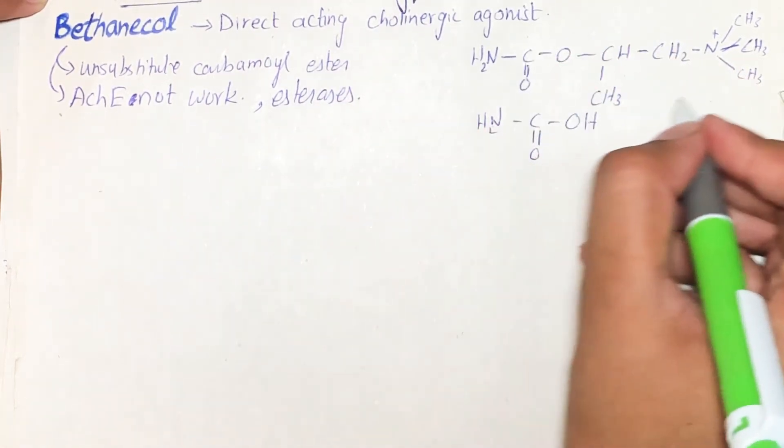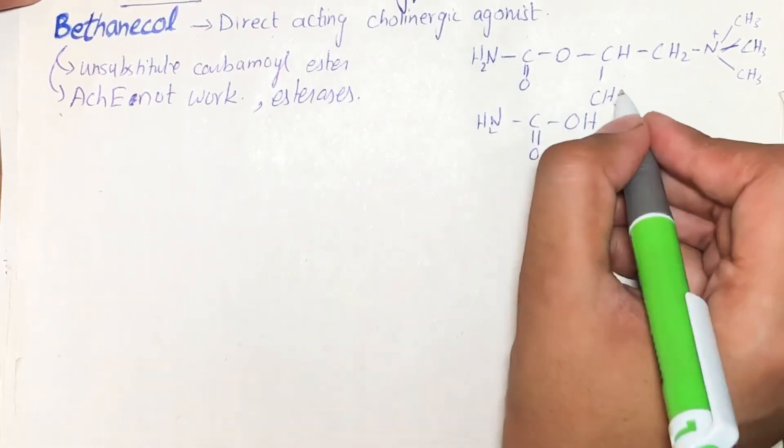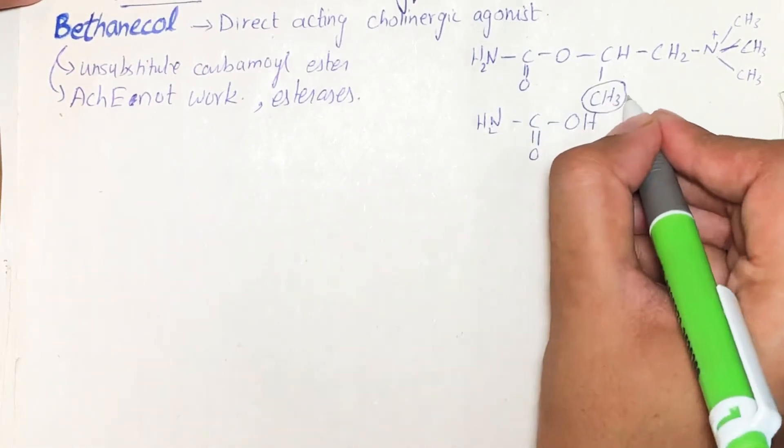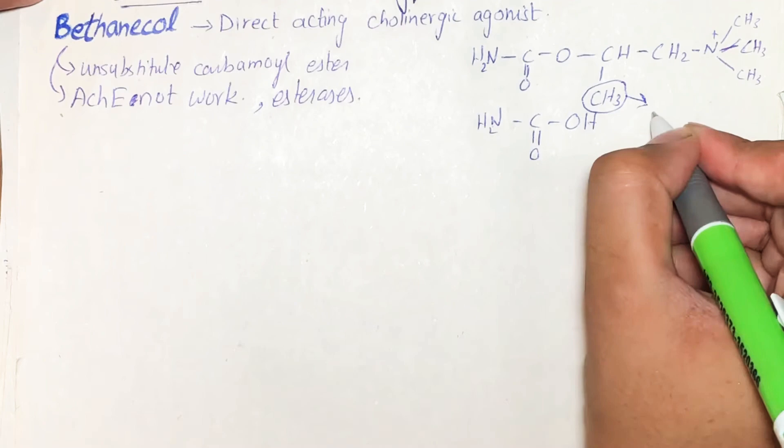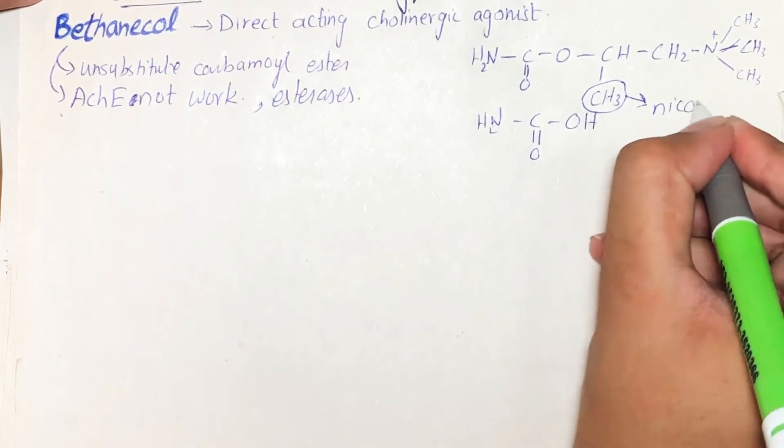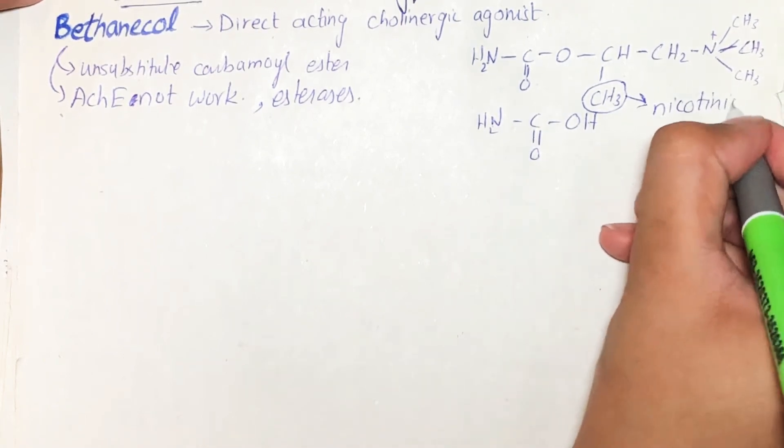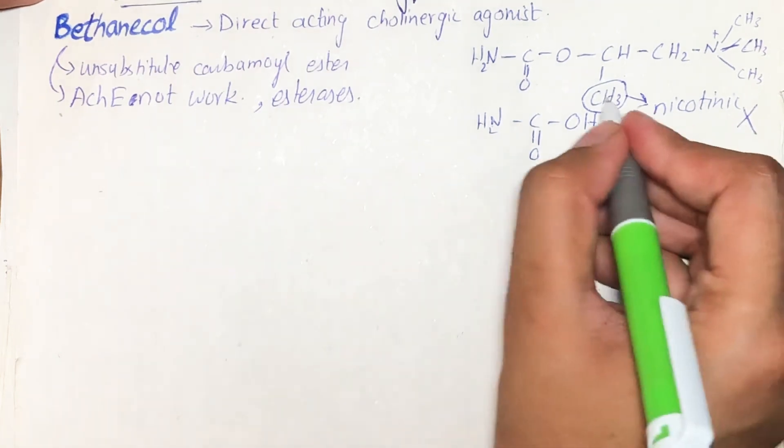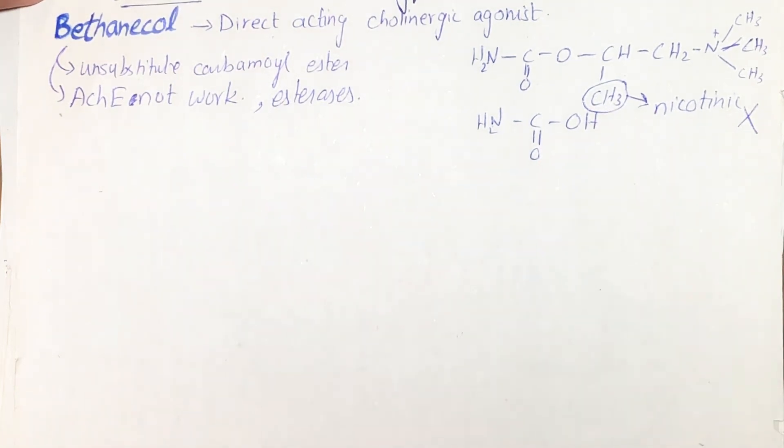This is the structure of bethanechol. Due to this methyl group, bethanechol lacks nicotinic activity. Because of this methyl group, there is no nicotinic activity, but it has strong muscarinic activity.